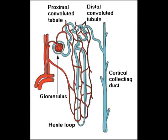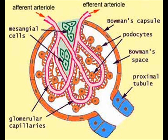There are one million nephrons in each kidney. The nephron is a filtering unit. The nephron consists of a glomerulus, which is a bundle of capillaries. This is surrounded by a Bowman's capsule.